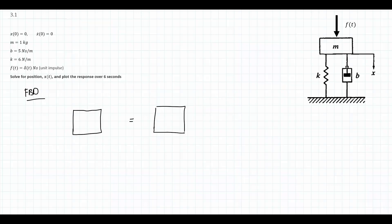Let's look at the forces acting on the mass. I'll start with the applied force, F of t. We're told that for this example F of t is going to be a unit impulse — a delta. I'm going to start generically using variables and parameters, and then put in specifics later, so we start with a more general solution.